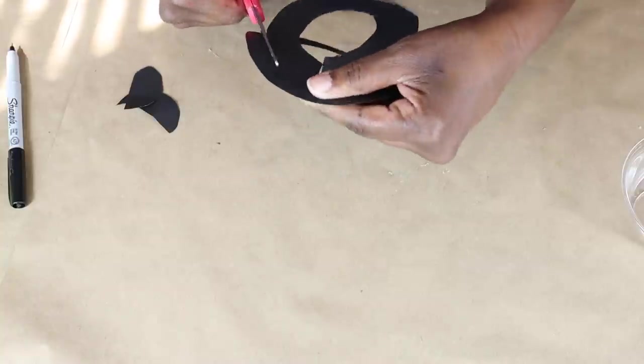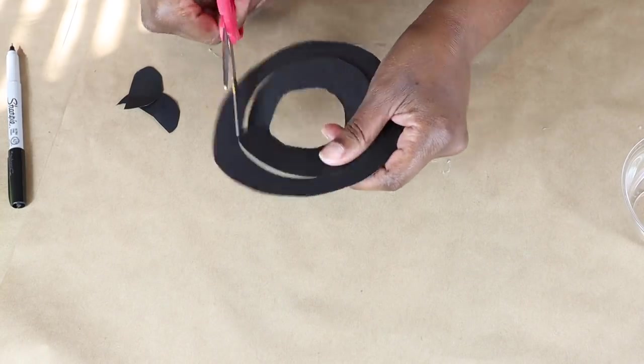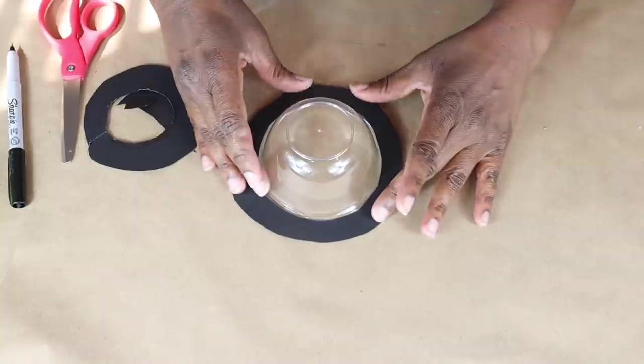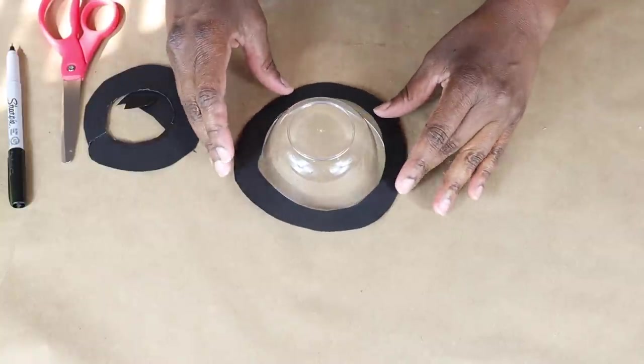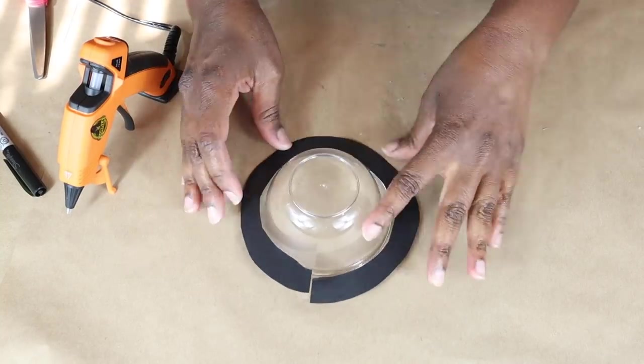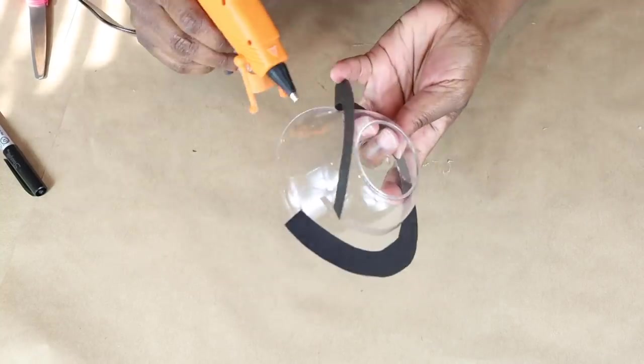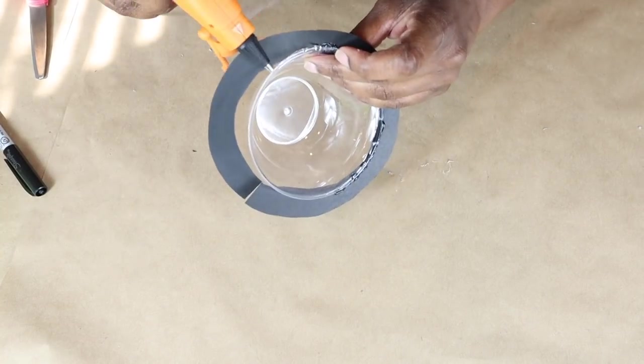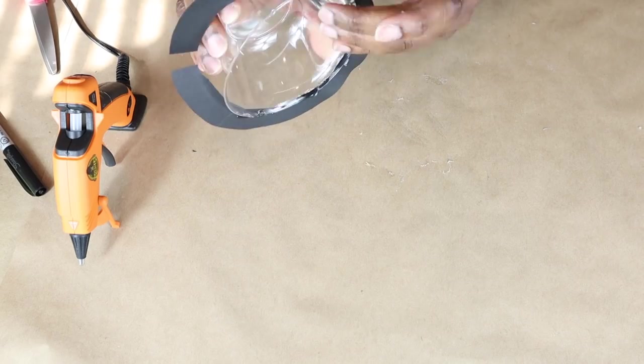I didn't do the best job of cutting it out. And you will see in a minute, it does fit over, but I cut it a little too large, but I'm still going to go ahead and use it. I'm just going to attach it to the bottom or to the top of the little plastic bowl flipped upside down. And that's going to form the brim of his hat.